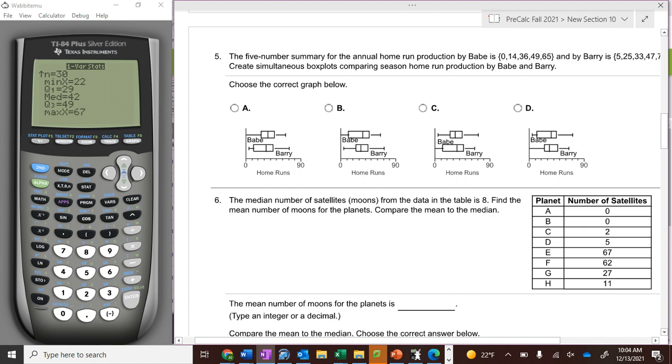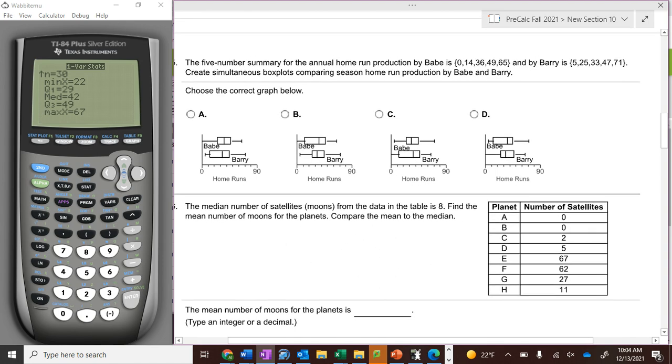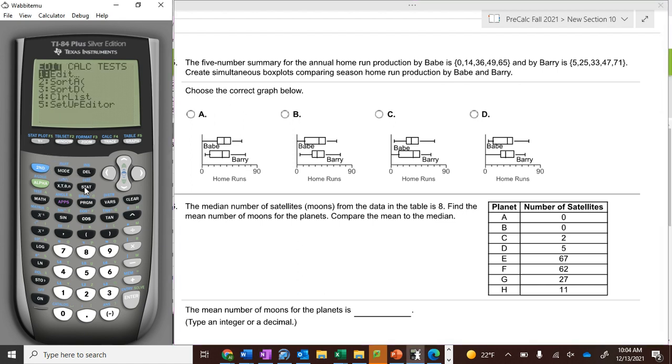So now five-number summary. If we would graph these, your graphing calculator will graph box and whisker plots. So what we're going to do is second, quit, stat, edit, up, clear, up, clear, down.